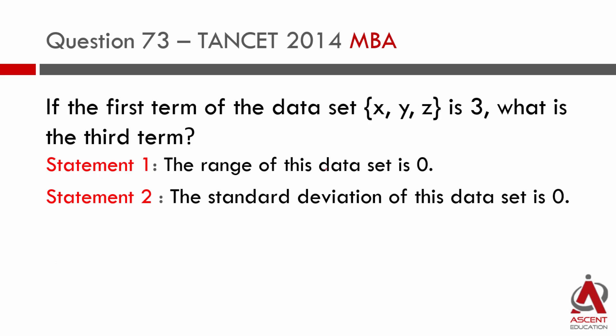If the first term of the data set XYZ is 3, in the data set there are three terms and the first term is 3. What is the third term is what we need to find out. Statement one is the range of this data set is zero, the second one is the standard deviation is zero.